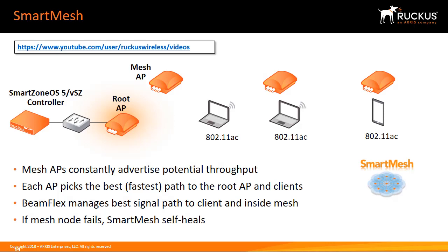SmartMesh enables access points to create a dynamic mesh without the need for cable connectivity. The root AP is connected with an Ethernet cable to the Layer 2 network, which has a SmartZone OS 5 controller. Meshing APs constantly advertise their potential throughput. The first meshing AP advertises a capacity of 300 Mbps. The second meshing AP, with direct view of the root AP, may also advertise 300 Mbps. The third meshing AP without direct view of the root AP advertises 200 Mbps due to taking an extra hop.